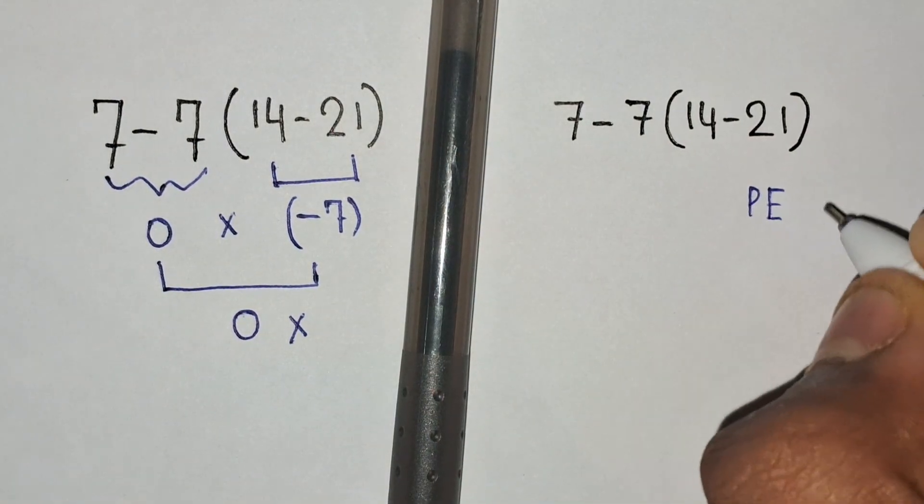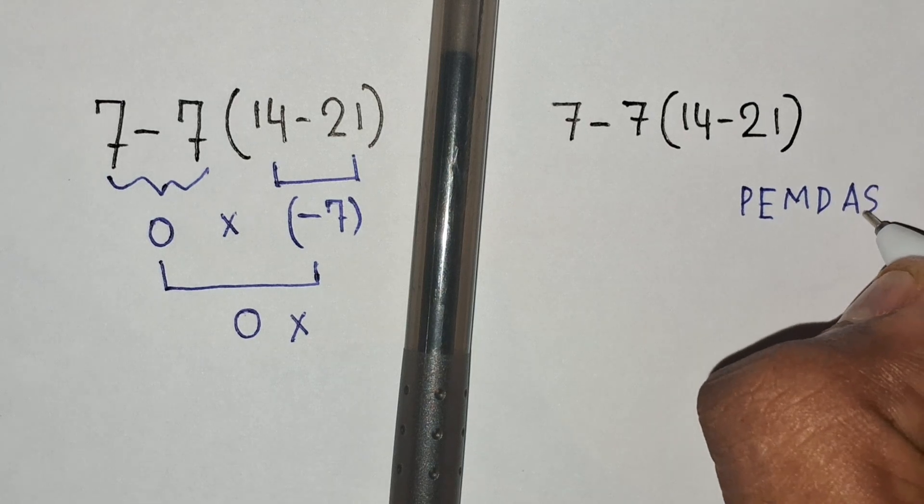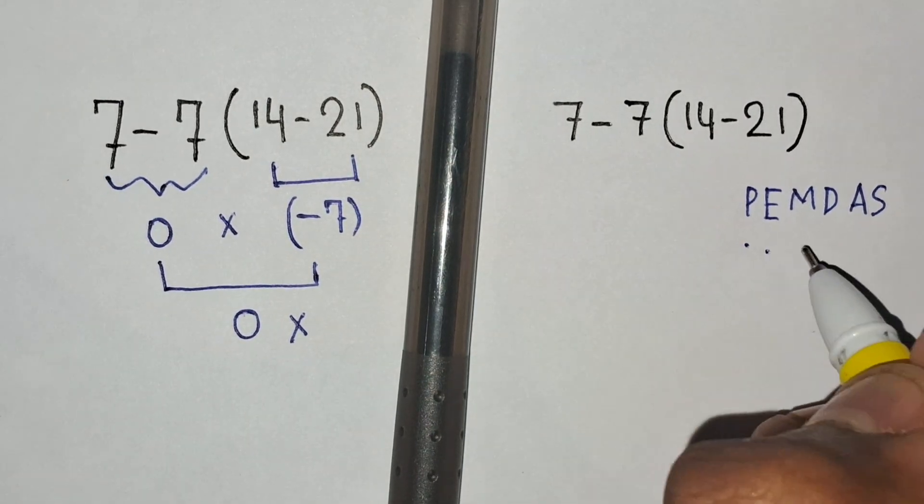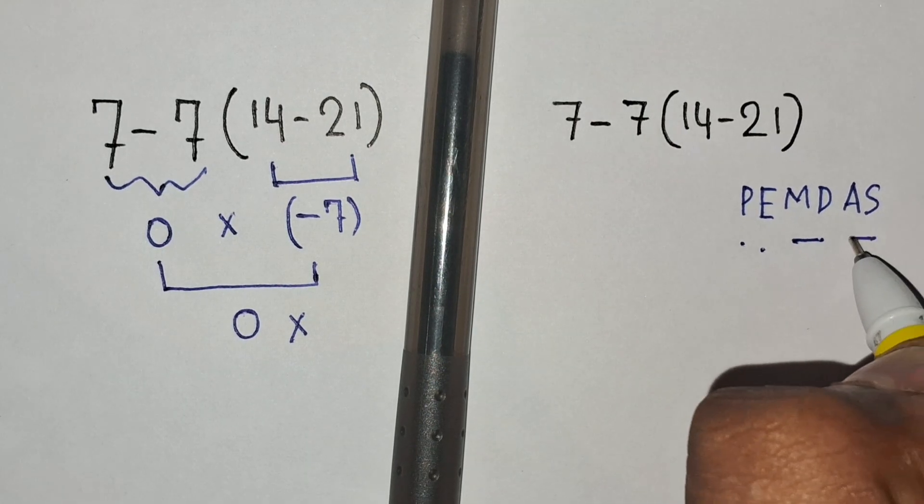According to the order of operations, which is called PEMDAS, where P stands for parentheses, E for exponents, M and D stands for multiplication and division, and A and S stands for addition and subtraction.